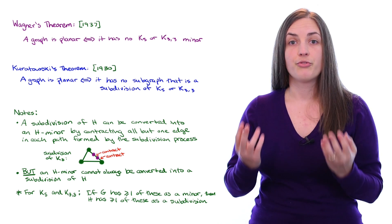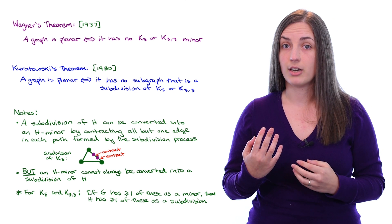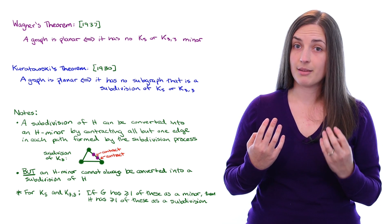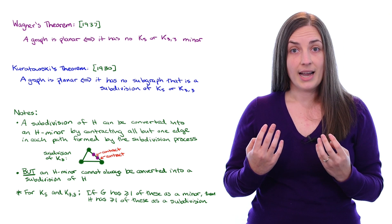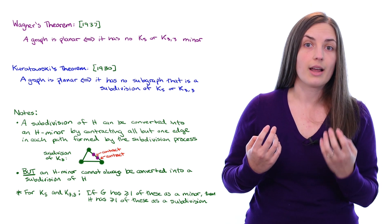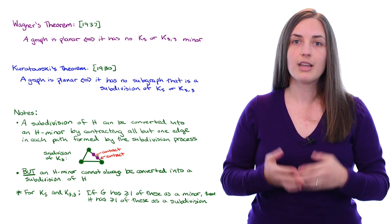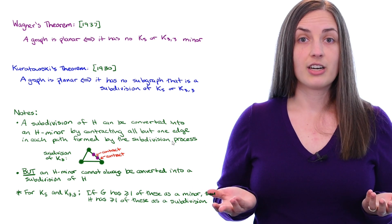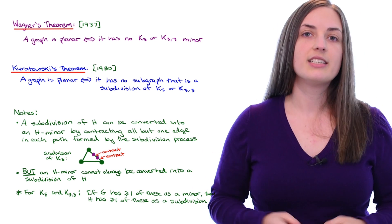For those graphs in particular, if a graph G was to have at least one of those two graphs as a minor, then it will have at least one of those two graphs as a subdivision. Maybe you find a K5 minor in your graph. That doesn't necessarily tell you that you'll have a K5 subdivision as well, but it does tell you that there will be at least a K5 or K33 subdivision in your graph. In other words, it'll be non-planar. The final story is that these two theorems are indeed equivalent.